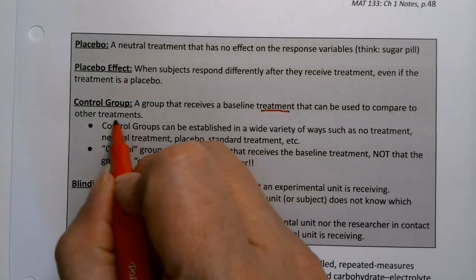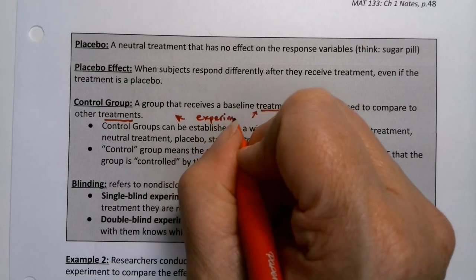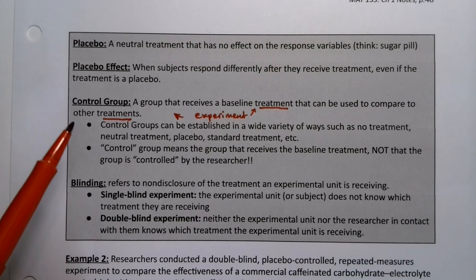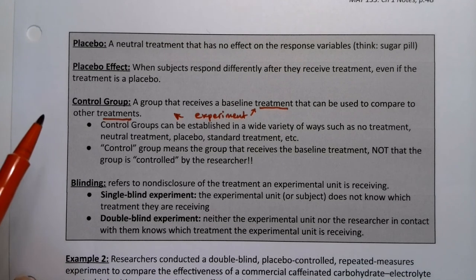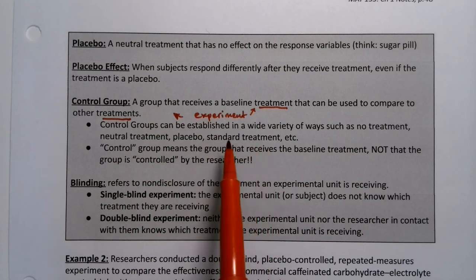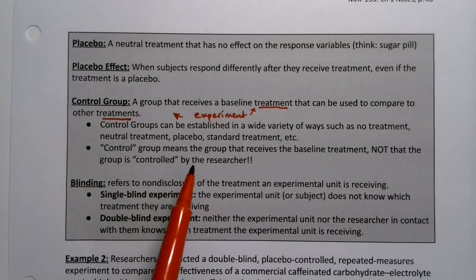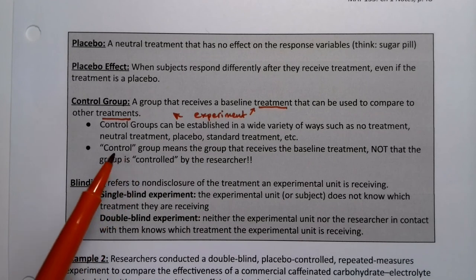Control groups technically are only part of experiments. Neutral groups that are not part of an experiment are often talked about as if they're control groups, but having those neutral groups that receive no treatment or the baseline treatment does not make it an experiment. Control groups can be established in a variety of ways: no treatment, neutral treatment, placebo, or standard treatment. Control group means the group that receives the baseline treatment — it does not mean they're controlled by the researcher. Control in the scientific setting means baseline treatment; they're the group you're comparing to.